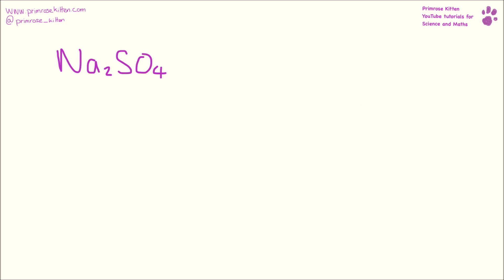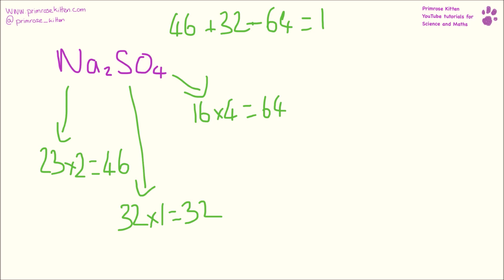Here we have sodium sulfate. Sodium has a mass of 23, and there were two of them, giving us a total of 46. Sulfur has a mass of 32, and there's one sulfur, giving us a total of 32. And oxygen has a mass of 16, and there are four of them, giving us a total of 64. 46 plus 32 plus 64 gives us 142 as the total mass of sodium sulfate.